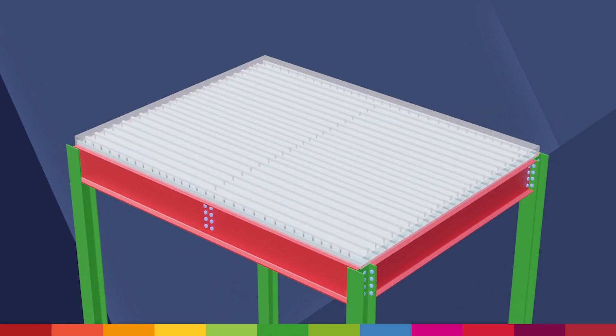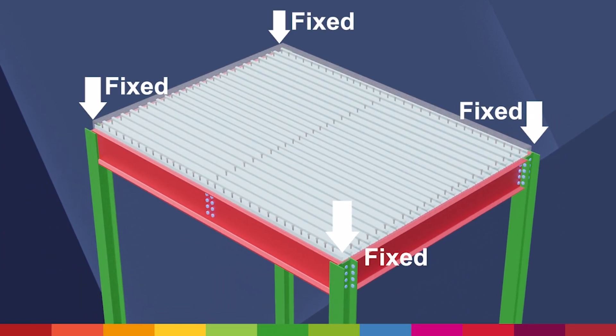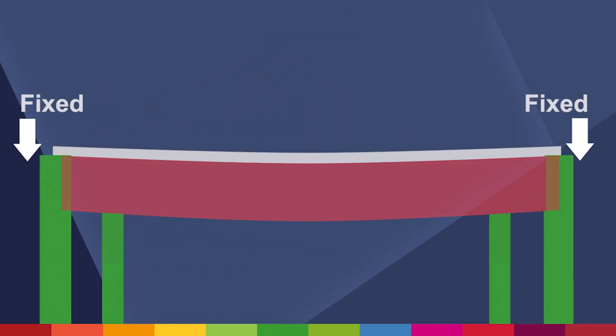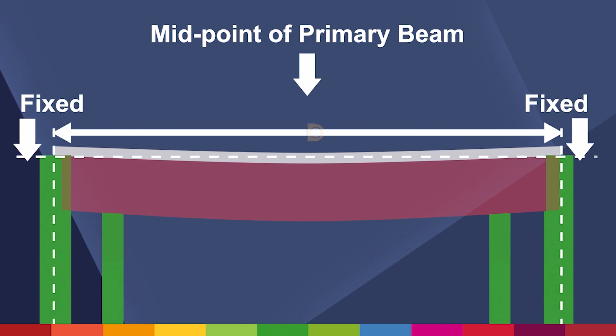Primary beams span between the columns. Beams at connection to the columns remain fixed in the vertical axis. The primary beam will have some level of deflection, with the greatest measurement of deflection typically being around the centre point of the beam. We can call this deflection A.